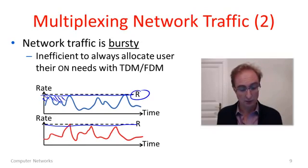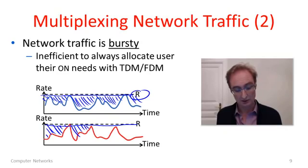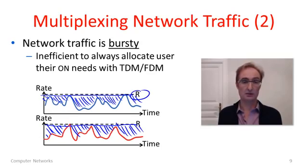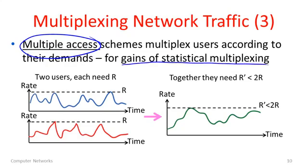The difficulty with allocating the peak bandwidth level is that we're wasting all the bandwidth that's not being used at any given time — that's good bandwidth we'd like to get something out of. Instead, we'd like to multiplex network traffic according to the demands each user is placing on the network, using what are called multiple access schemes. We want users to share a link such that whenever they want to send packets they get to send packets, and all their packets are mixed on the link according to their demands. If we did this, we would get the gains of statistical multiplexing.